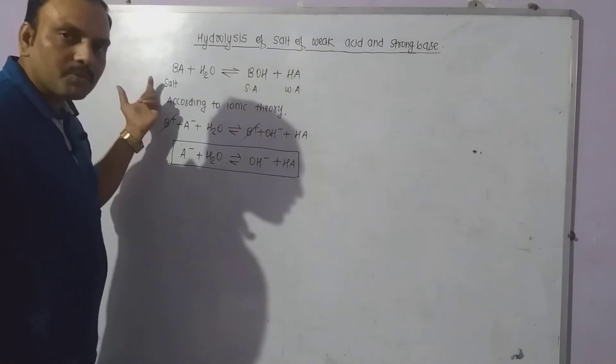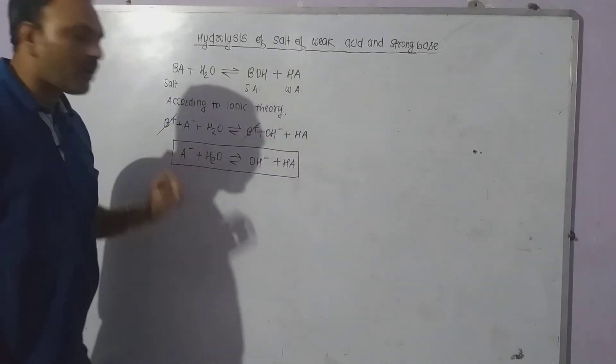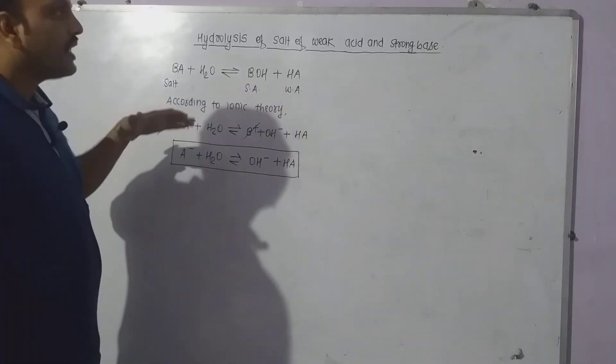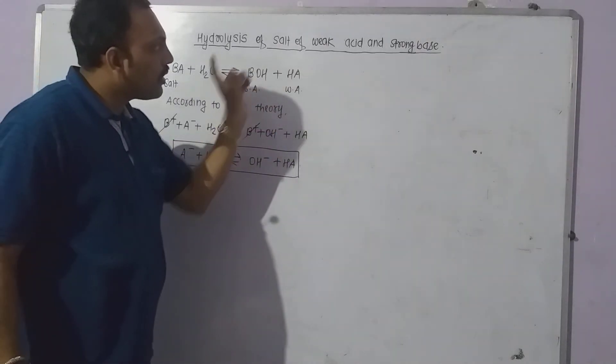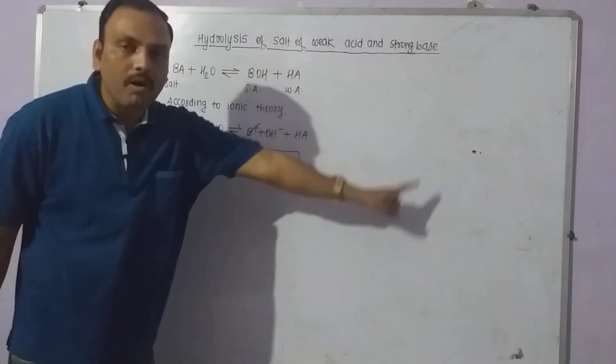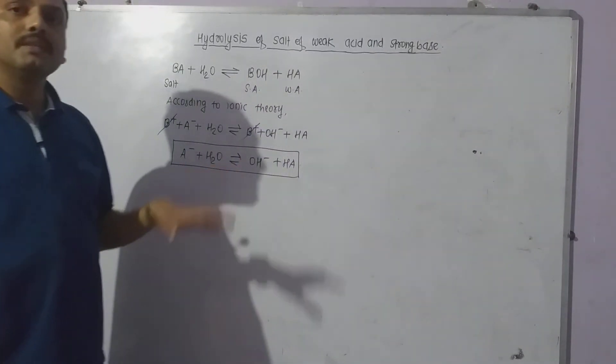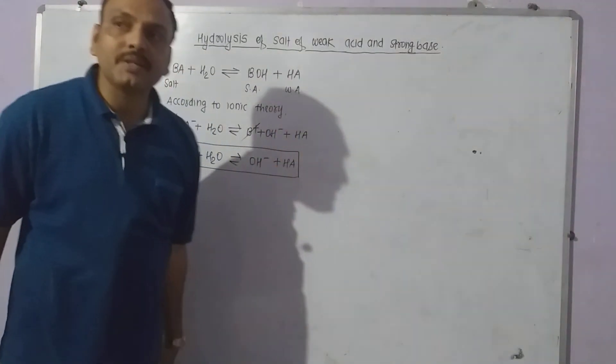As aqueous solution of salt of weak acid and strong base contain OH- ions, the aqueous solution will have pH greater than 7.